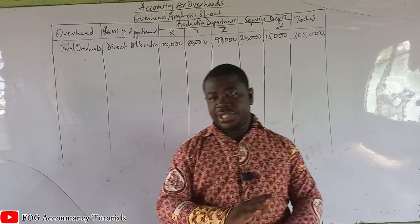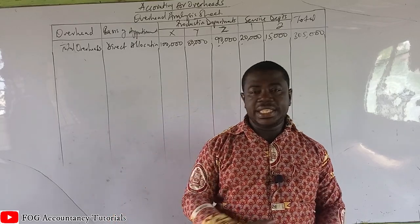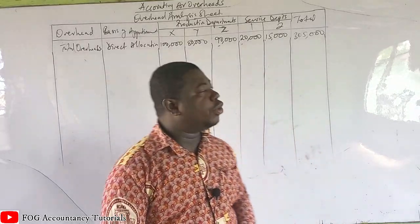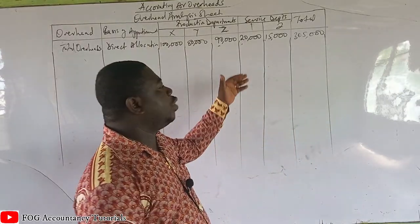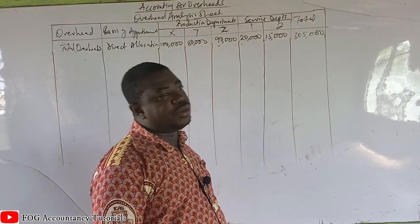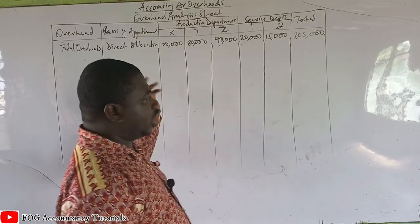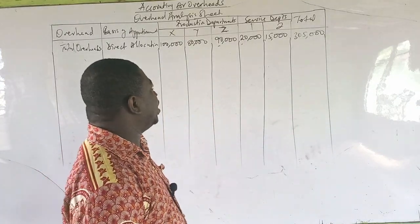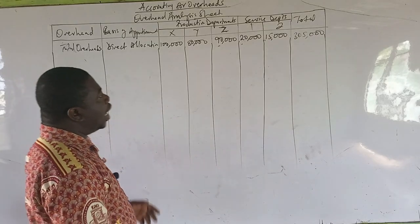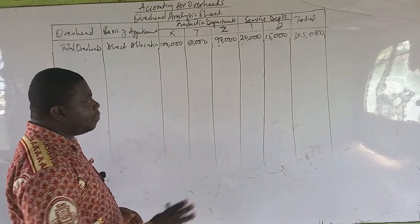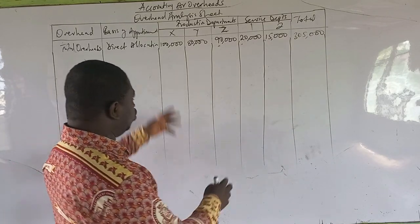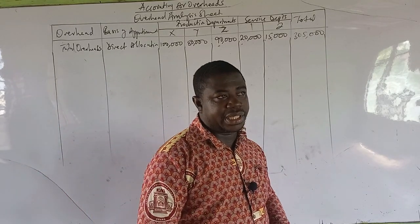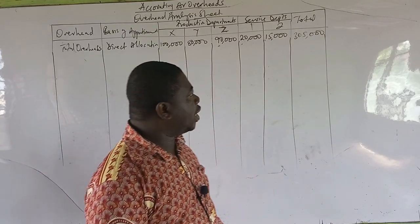The elimination method is very simple — the easiest among them all — because we are not going to do any repeated distribution. We will just share it once and that will be all. I am going to use the same question to solve the elimination method for you to see how it is done.